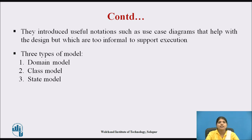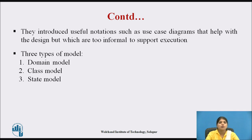Domain models are defined using UML class diagrams that include objects, attributes, and associations. Class models define classes along with their attributes and operations. The third type is the state model, in which a state diagram is associated with each class and is used to describe the lifecycle of the class.